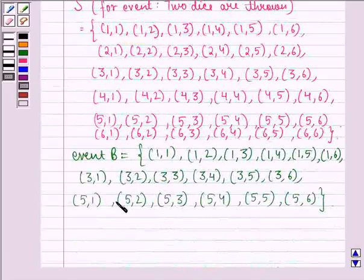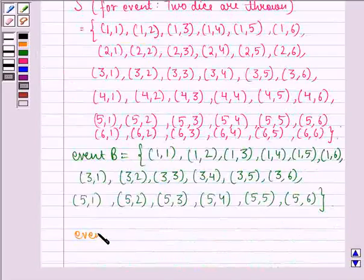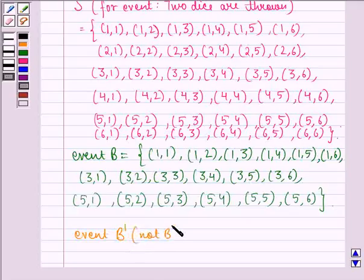Now we have to find out the sample space for event B dash, that is complement of B, that is event not B. This is same as event not B. This we can get by subtracting event B from the sample space.